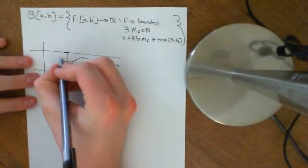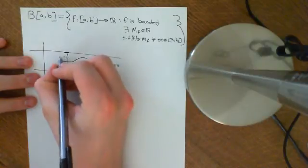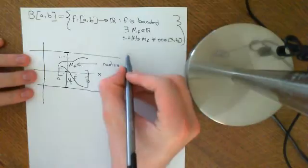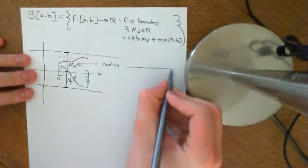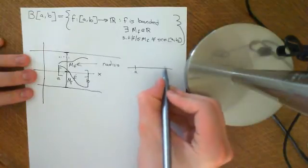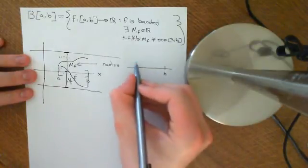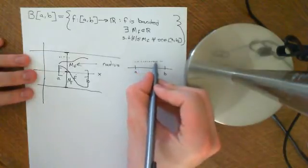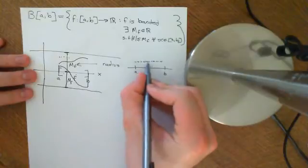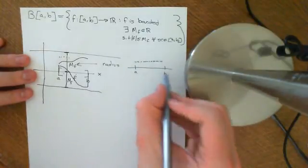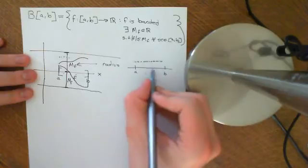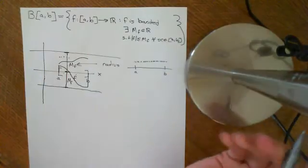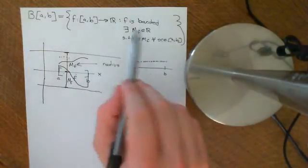Of course, the function doesn't need to be continuous — it could be going all over the place. For instance, our classic example: the function which is 0 on all the irrational numbers and 1 on all the rational numbers. That is a bounded function. It's obviously not continuous. So that's what we mean by a bounded function.